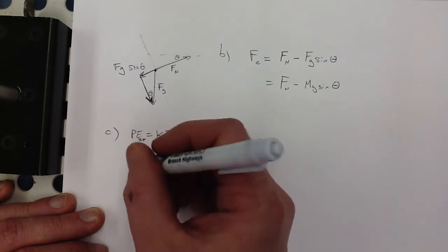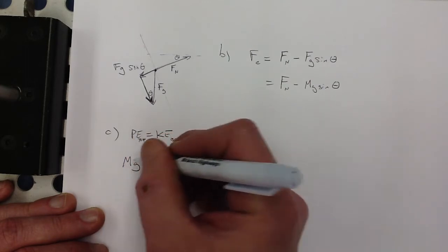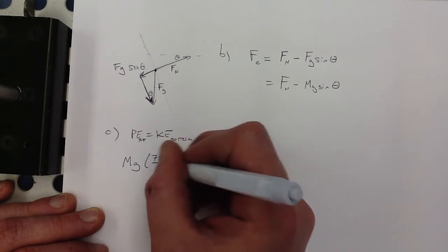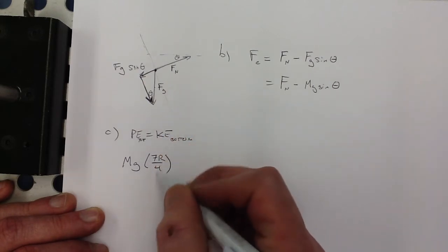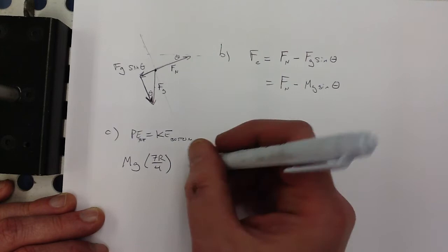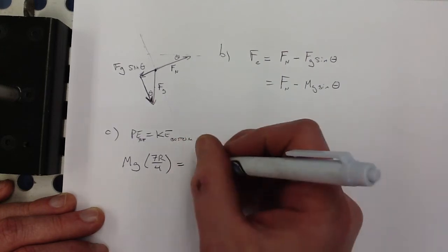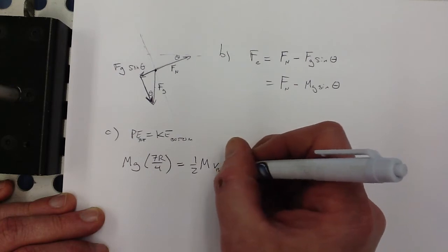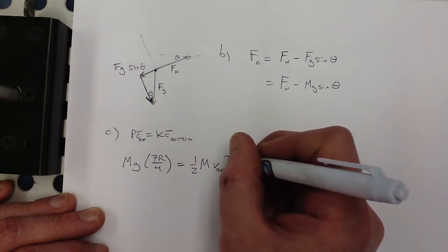I'm going to write that potential energy is going to be equal to kinetic energy. My potential energy at the top equals kinetic energy at the bottom. So potential energy at the top would be M capital M because that's what they're using G times 7R over 4. That's the 3 fourths of an R plus another R. That's going to be equal to 1 half M times the velocity at the bottom squared.